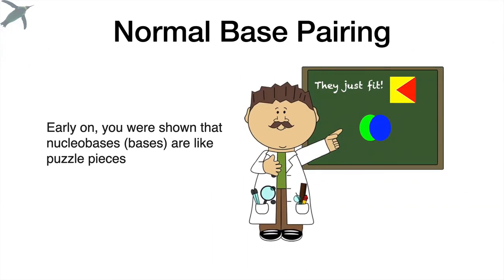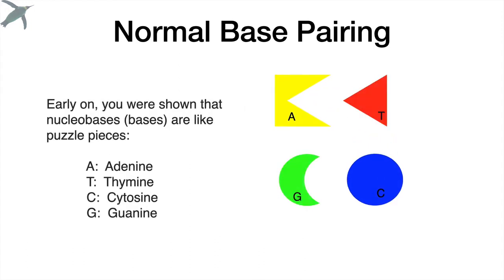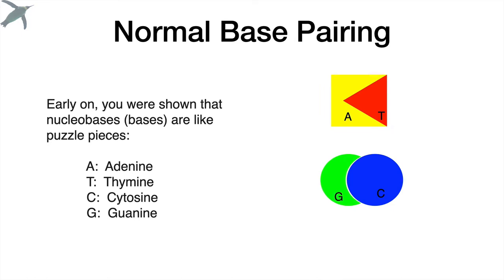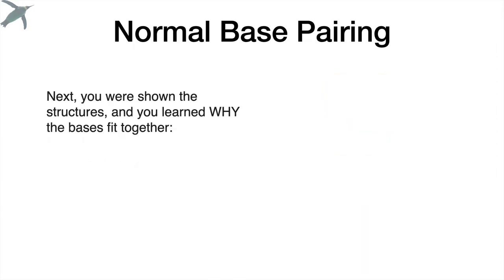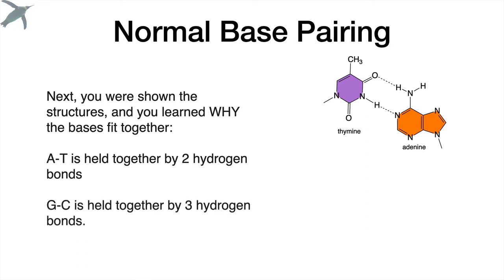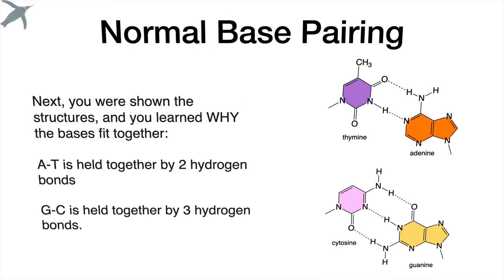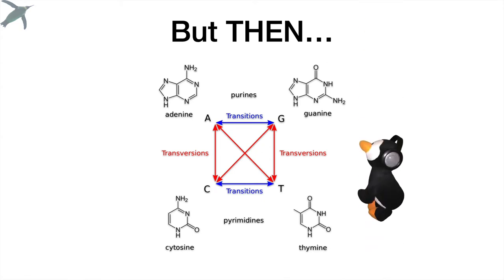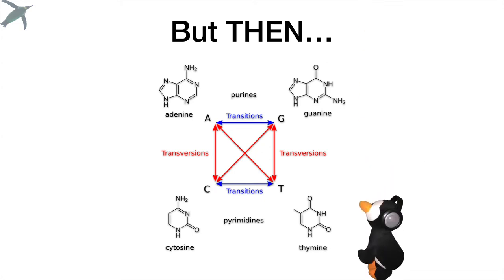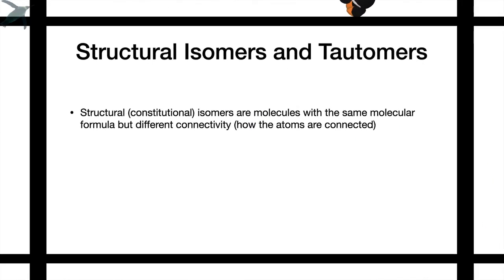Early on, you were taught that the bases are like puzzle pieces, and the reason why adenine and thymine always go together, and cytosine and guanine always go together, is because that's just how they fit. Later in your career, you were shown why they fit: it has to do with hydrogen bonds. Adenine and thymine are held together by two hydrogen bonds, while cytosine and guanine are held together by three. But then they hit you with the fact that there can be changes and mutations, and purines and pyrimidines can even be switched out — and most textbooks don't explain it. But you came to the right place.